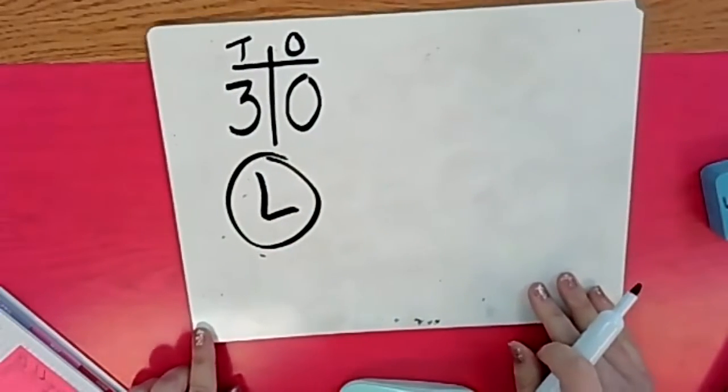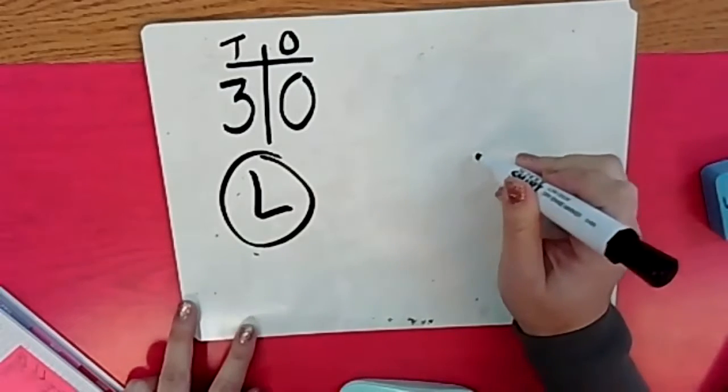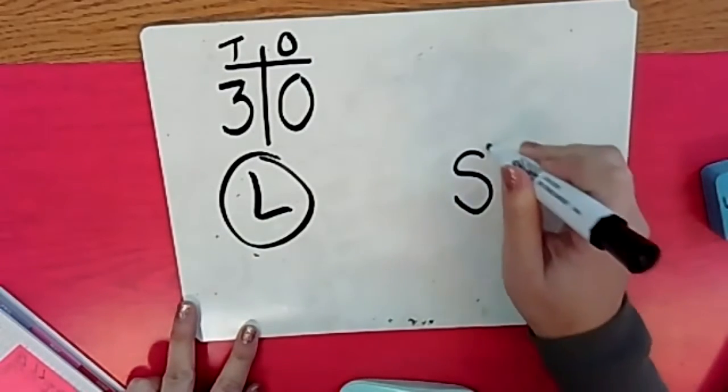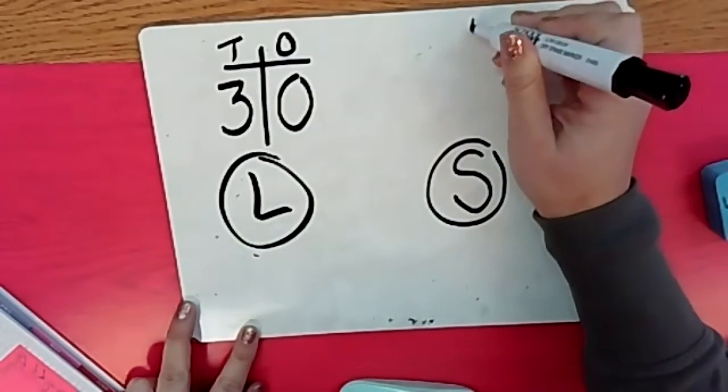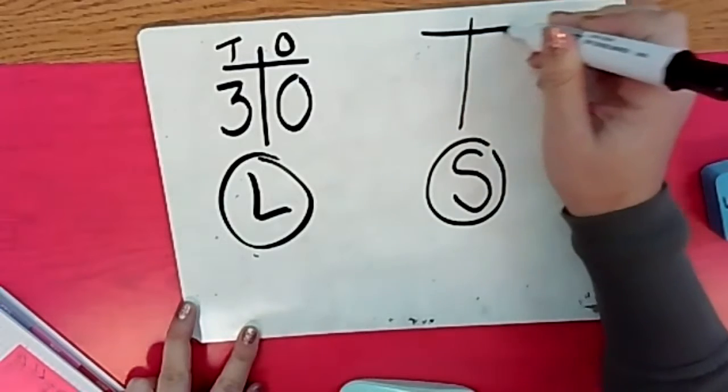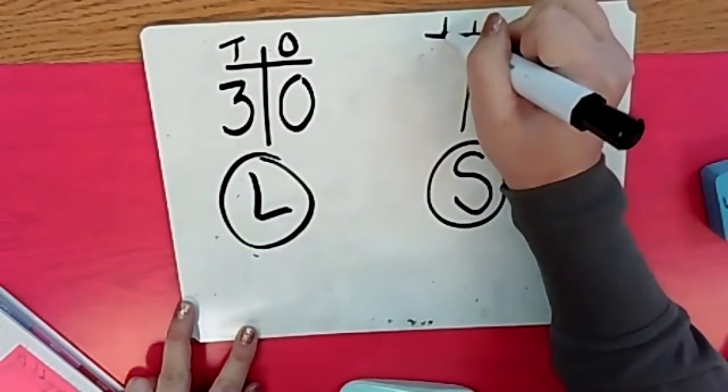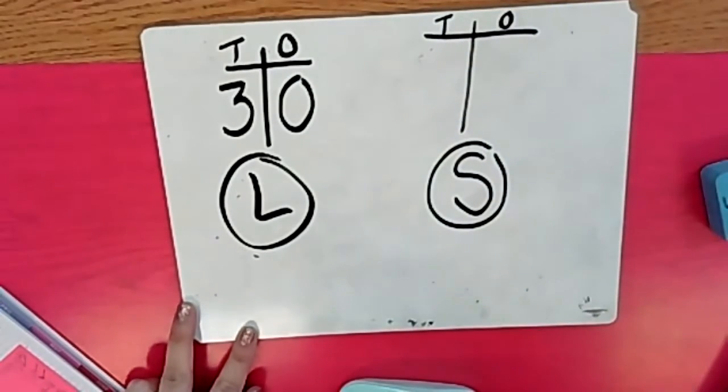Now Lisa's friend is Sally. So we're gonna make one for Sally. Label it S for Sally. And above, make the letter T, okay? And then label it T for tens, O for ones. All right?